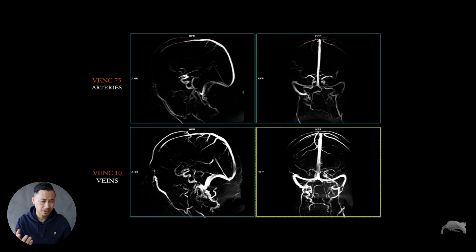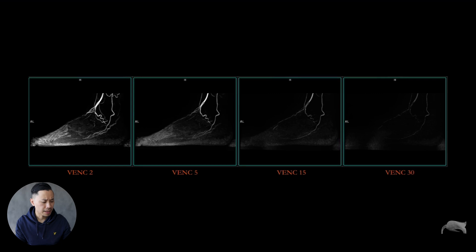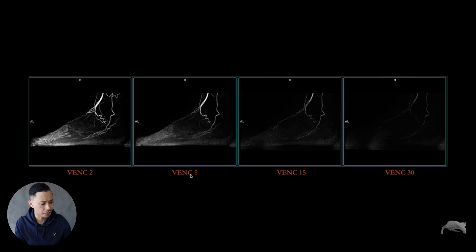I just use the standard one from Siemens right there. The same goes for other regions — for example the foot — just trying it out with very low VENC values of 2, 5, 30, 50. You can see the differences right here. It does have a great impact, the velocity encoding.